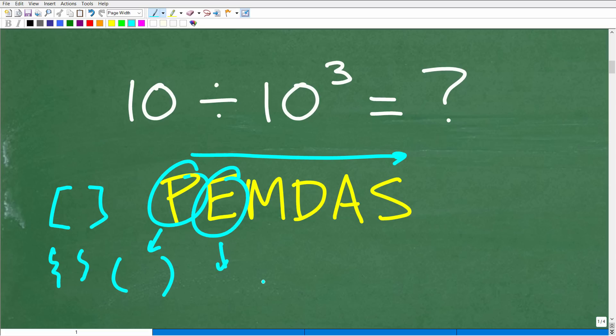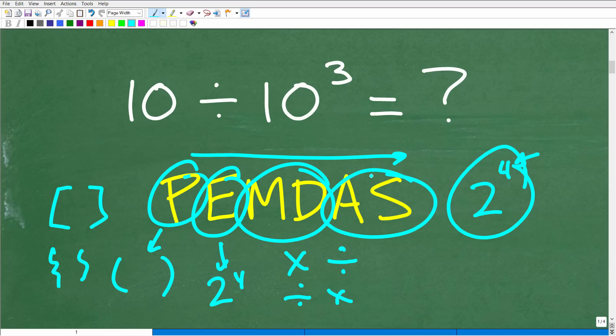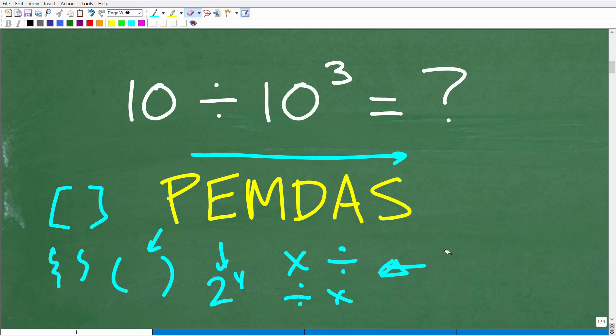So the E stands for exponents. So if you have something like 2 to the 4th power, this little number up here is called the exponent. But really, the E stands for power. So if you see anything like 2 to the 4th or 10 cubed, we're going to do that next. So that probably explains how we're going to do this problem correctly. The next is multiplication and division. So you're going to do multiplication or division, whatever you see first from left to right. So this is another very common place where students misunderstand. So you're going to do multiplication or division if you see it from left to right in this order. And then A and S stands for addition and subtraction, and it works the same way. So that's just a quick review of the order of operations.